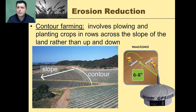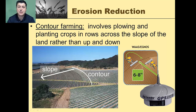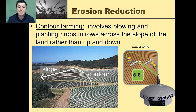Another way to grow things on less steep slopes is contour farming, which involves plowing and planting crops in rows across the slope of the land rather than up and down. A new technology that allows us to do this with greater accuracy is GPS. By programming the lay of the land into our tractors, we can guide them around the property to allow for the most effective plowing and prevent the maximum amount of erosion.